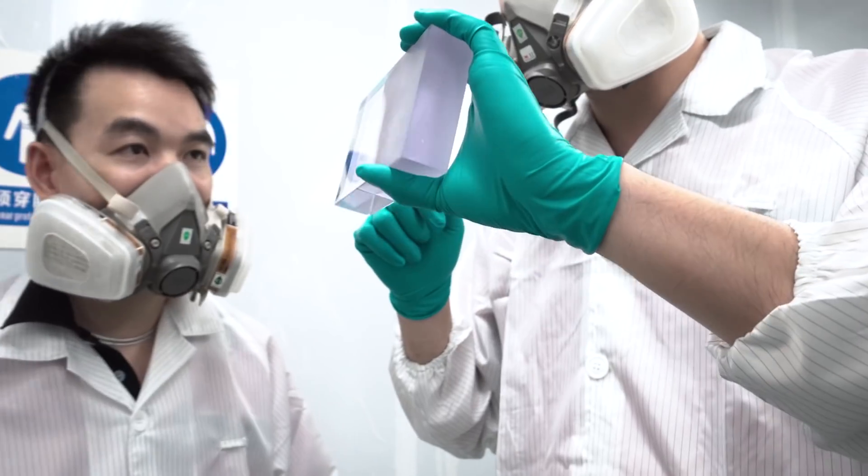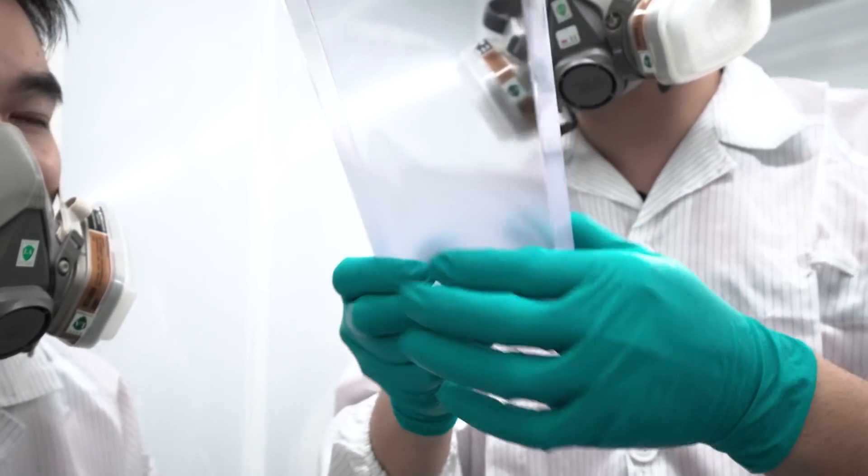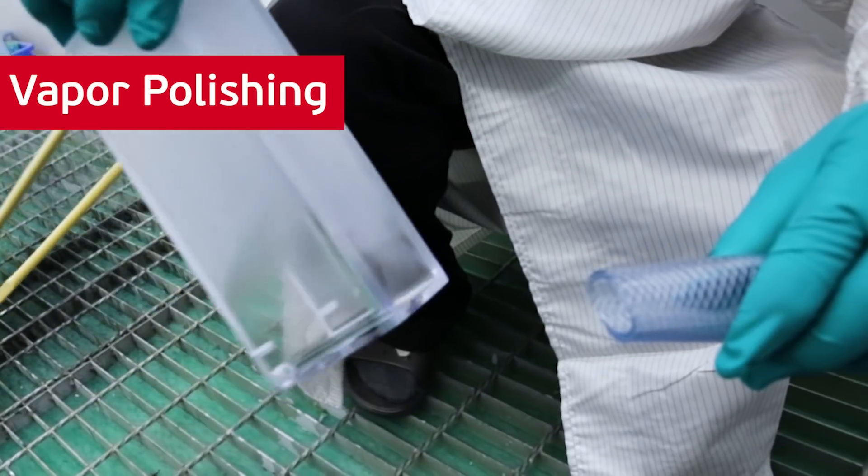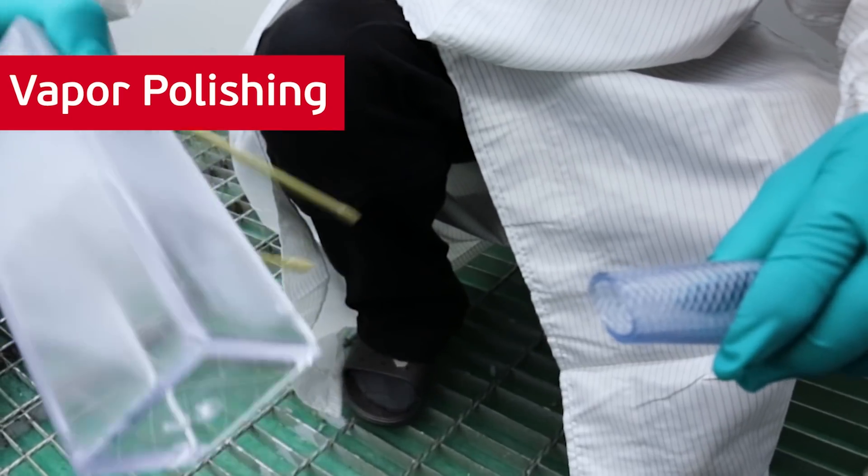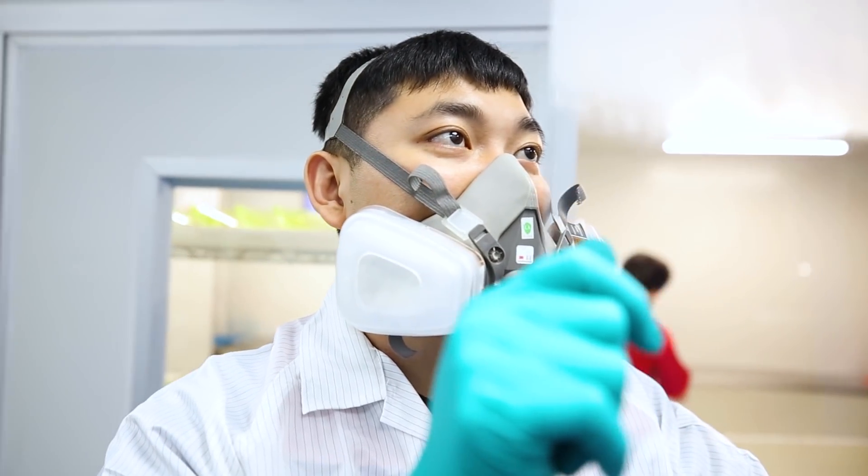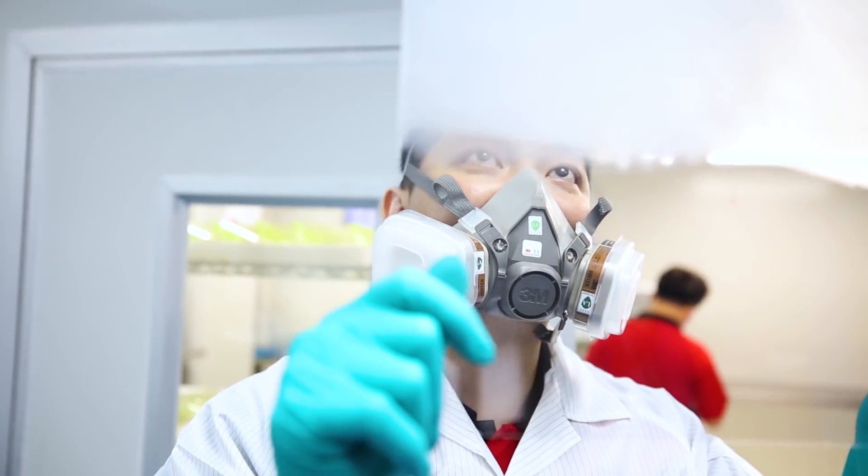If you want an extremely clear surface on complex geometries or hard-to-reach areas, vapor polishing is the way to go. This is a specialized treatment we do in-house for achieving optical clarity on polycarbonate plastic.